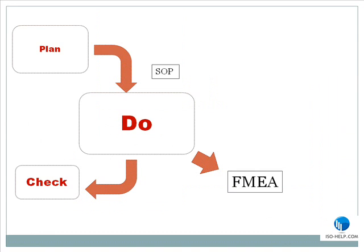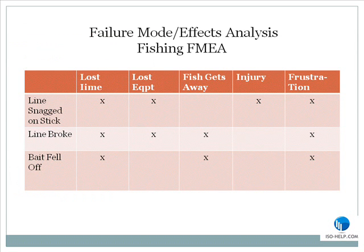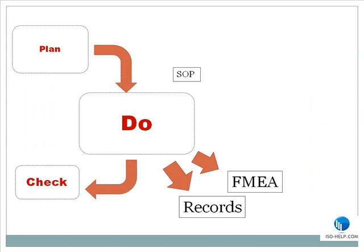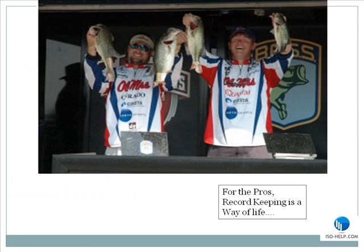Occasionally, a process failure occurs. In the quality systems world, an FMEA is generated. In fishing, any of a dozen things can happen to cause a failure to catch a fish. Failure mode and effects analysis may be performed if your Do step does not go according to plan. Along with the Do phase, records are quite often generated, describing the activities of the process. In professional fishing, records are kept on the conditions, type of bait, time of day, and other things that might be important for performance improvement later on.